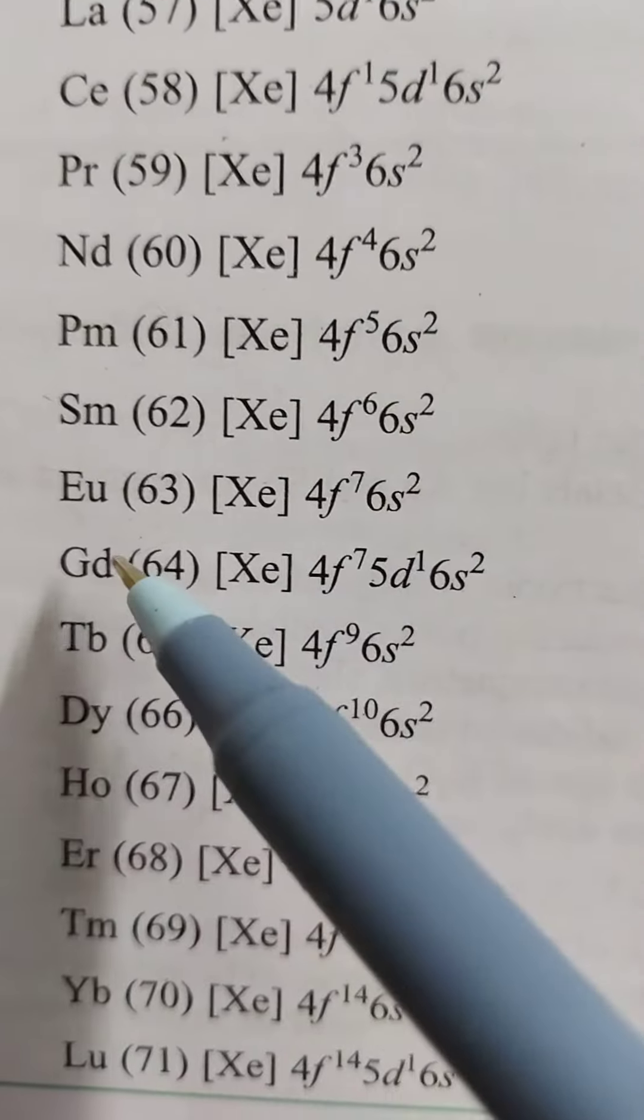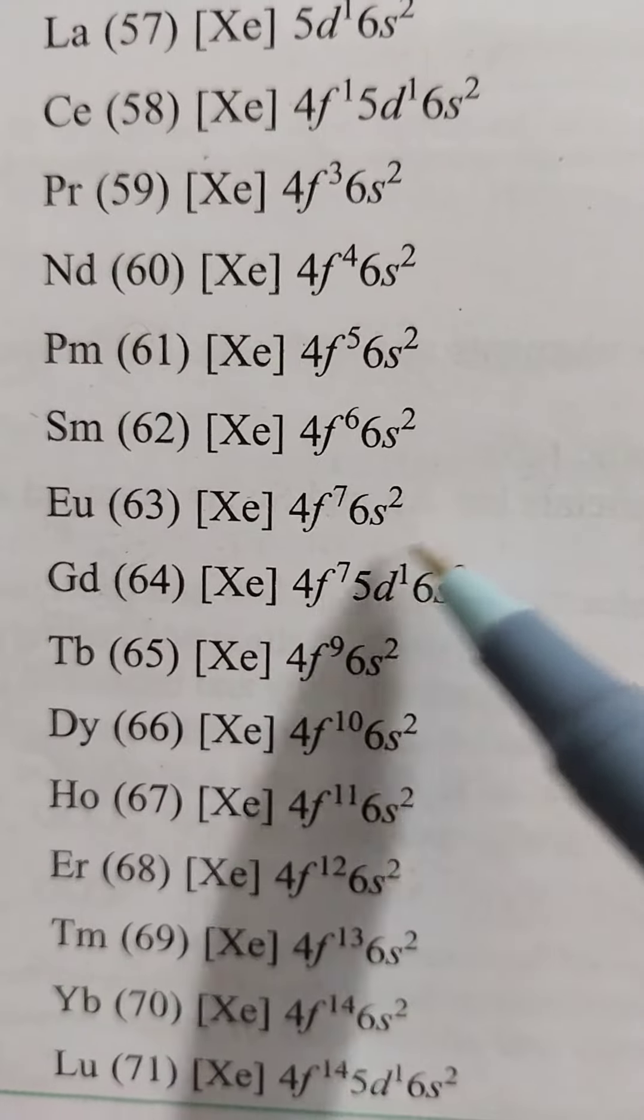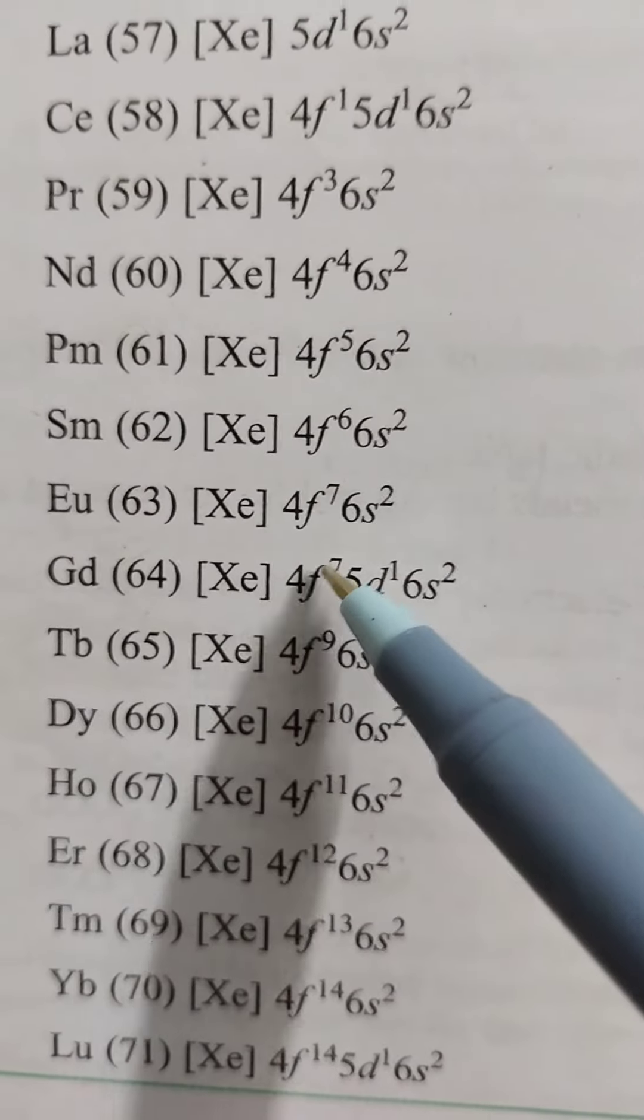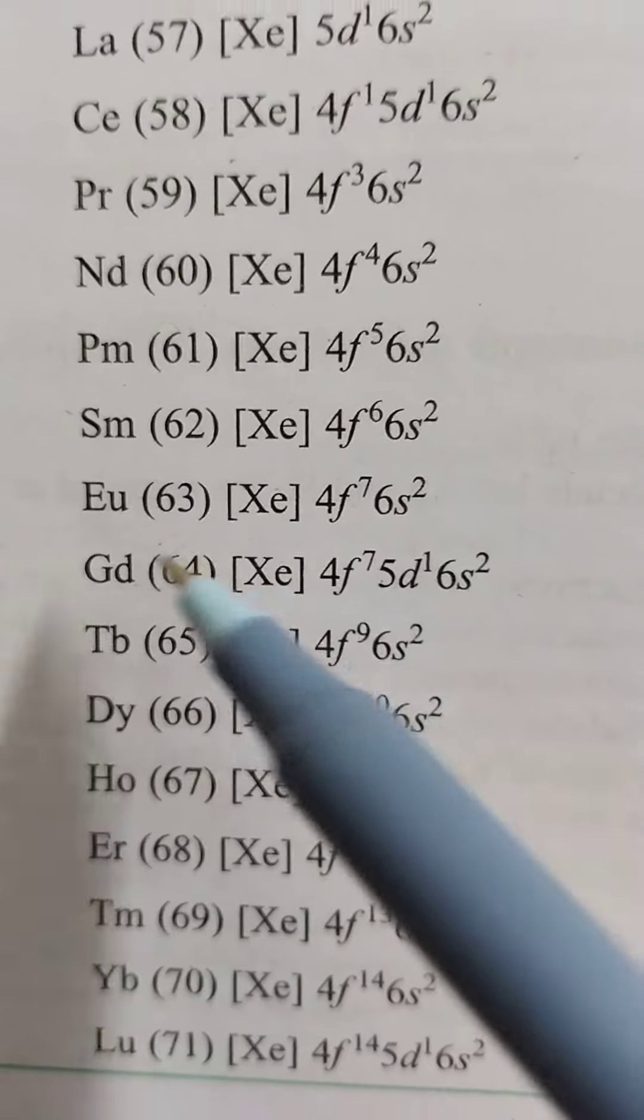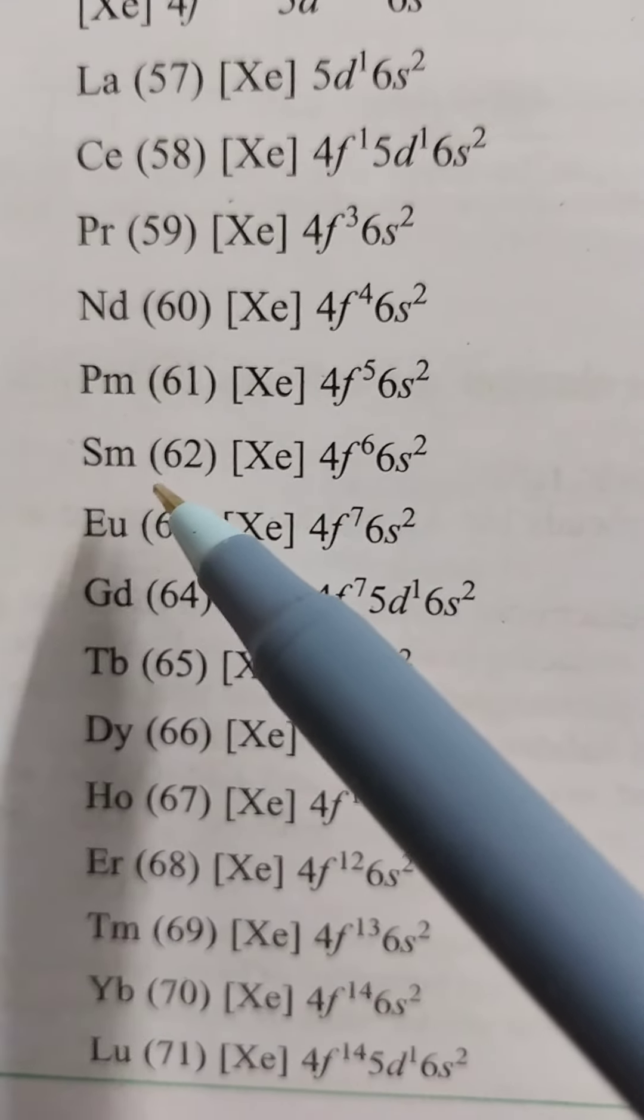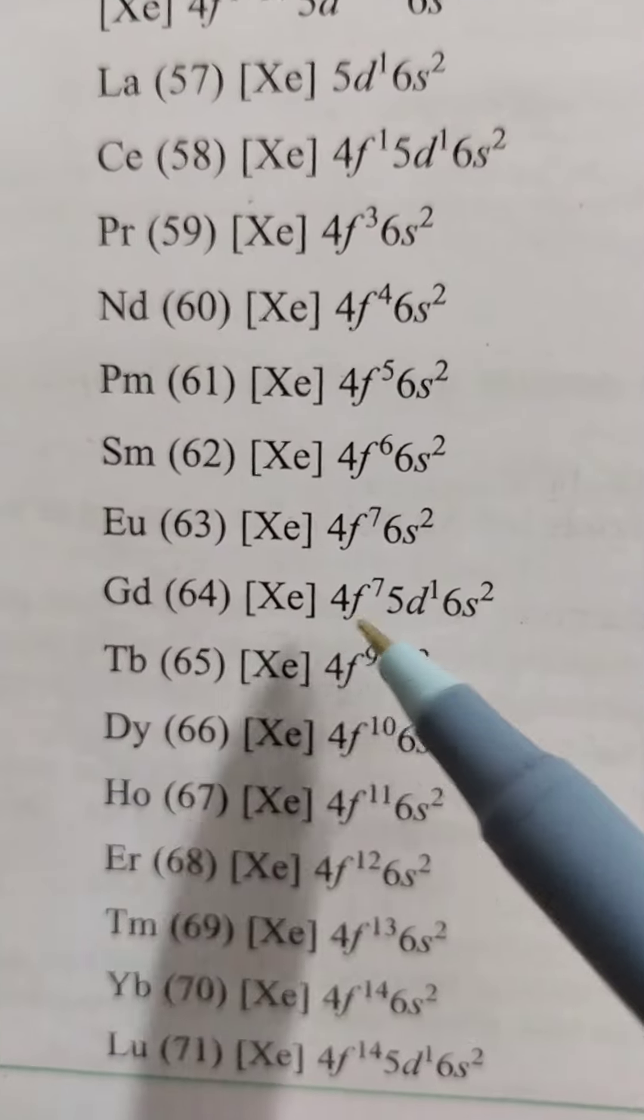Gadolinium, if it loses 3 electrons, we have xenon, most important, xenon 4f^7. This is also half-filled configuration. So Europium+2 is more stable. Gadolinium+3 is also more stable.